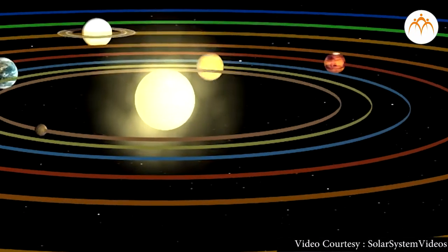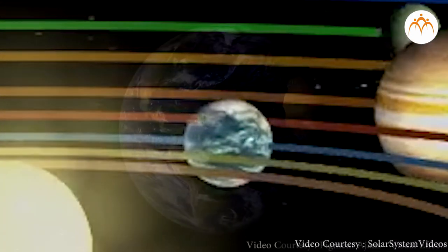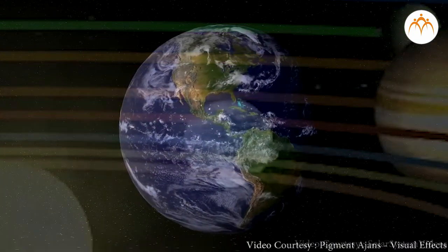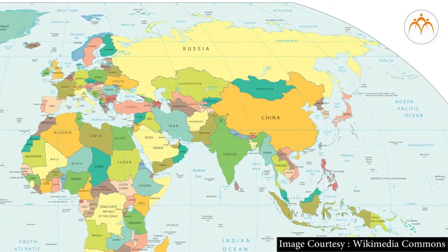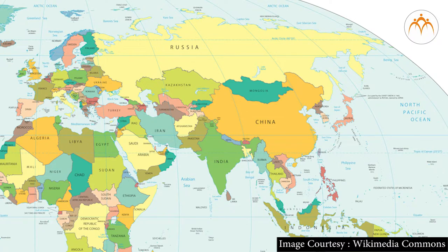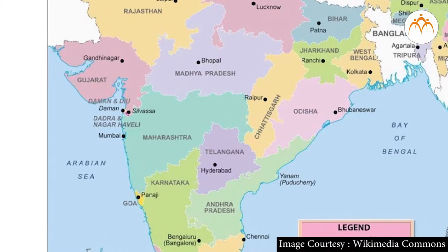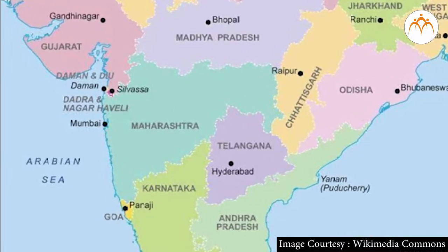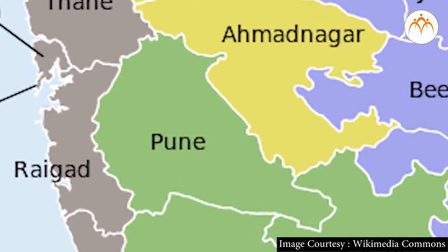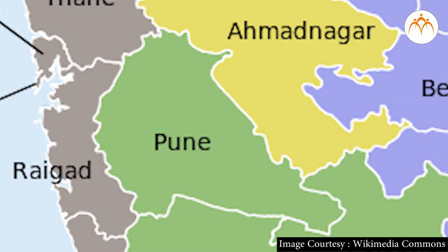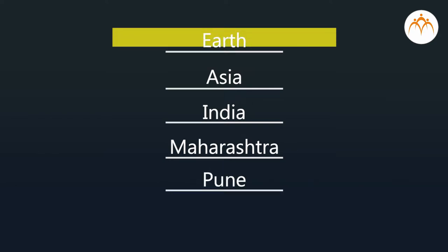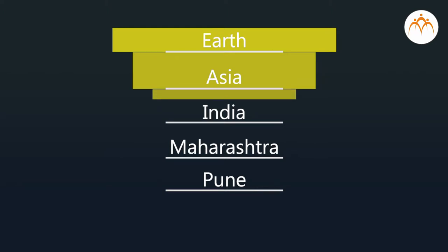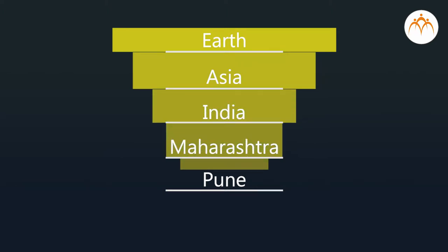Let's look at a geographical example of hierarchy. Earth is the planet in the solar system. Land masses on Earth are divided into continents. India is one country out of many in the continent of Asia. Maharashtra is one of many states in India, and Pune is one city in Maharashtra. In this hierarchy, Earth is the first and biggest level, and all the next levels are part of the previous level.